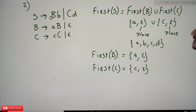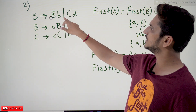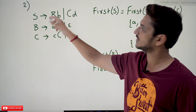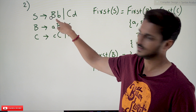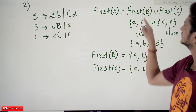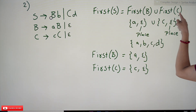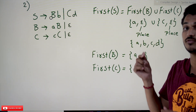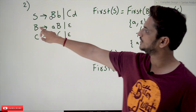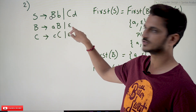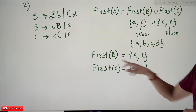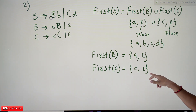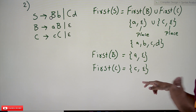Now consider S → BB | CD. The first symbol in the first production is capital B, so FIRST(S) = FIRST(B) ∪ FIRST(C). We need to calculate FIRST(B) and FIRST(C) first. FIRST(B) = {a, ε} since 'a' is terminal. Similarly, FIRST(C) = {c, ε}. These are the terminal symbols encountered in the productions.